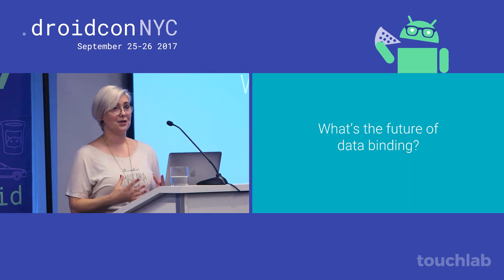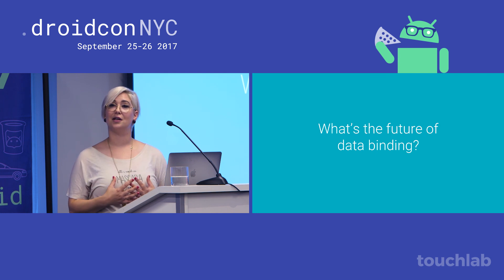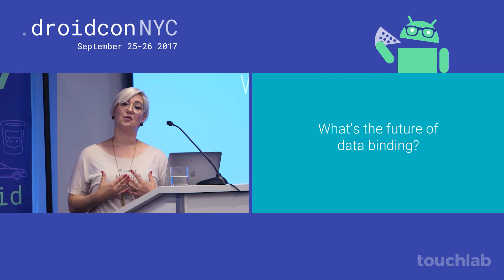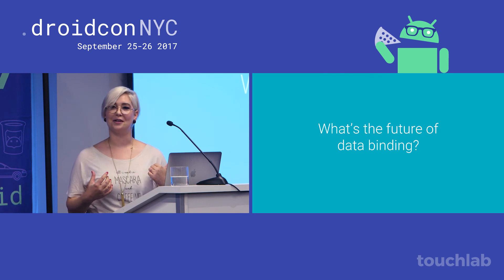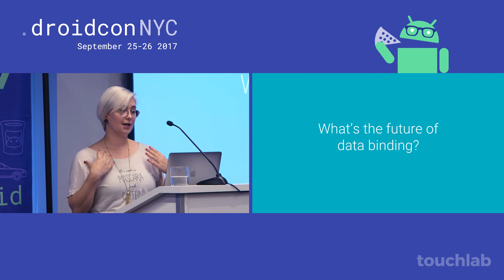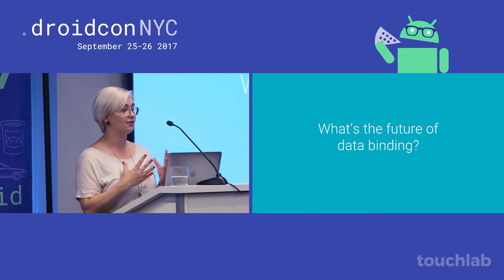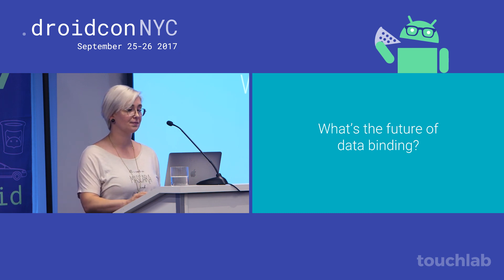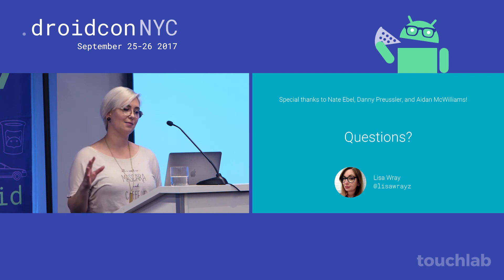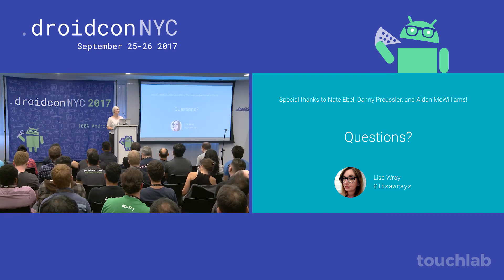This was in no way an exhaustive overview of everything data binding can do — it does much more, and I encourage you to play with it. As for its future, it's continuing to be actively developed by Google. If I could have a wish list, it would include every Java example in the docs also being shown in idiomatic Kotlin, and I would love to see delegates like the ones I've demonstrated here for common causes of boilerplate with data binding, like notifying observables or inflating and binding layouts. Thank you very much.